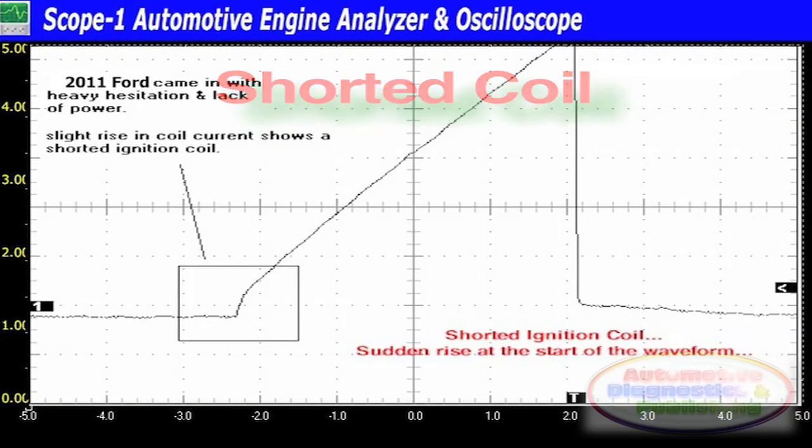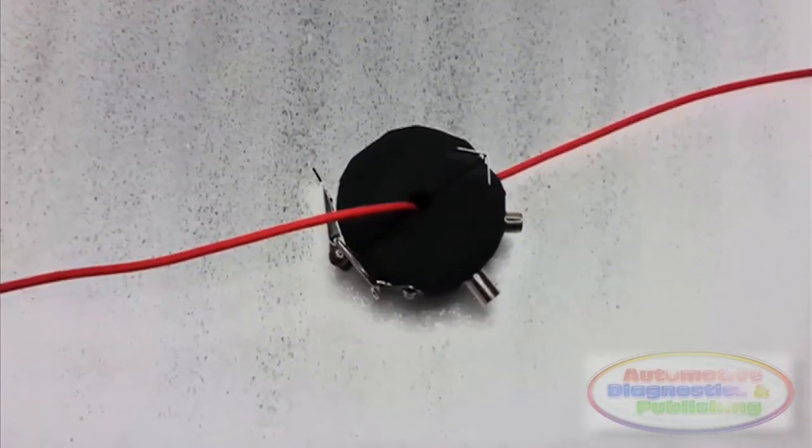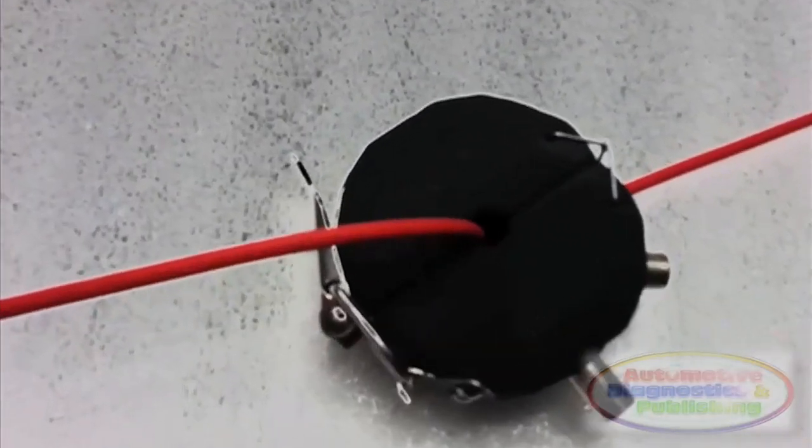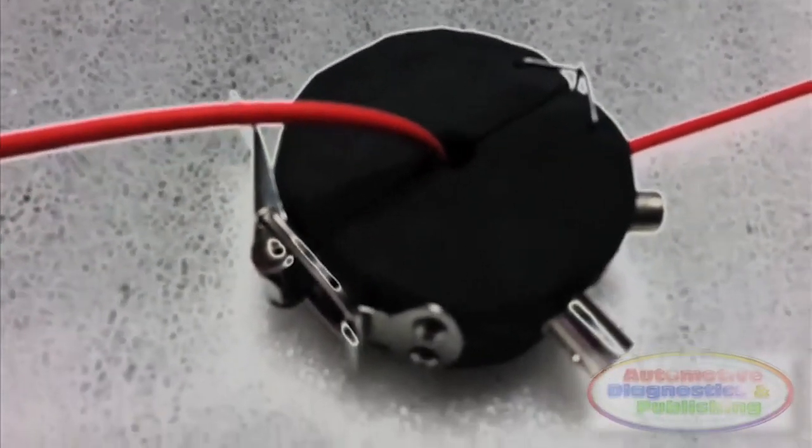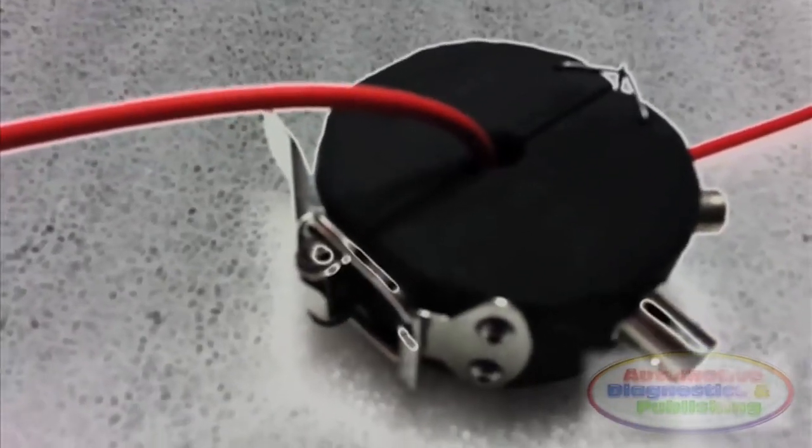Ignition coil operation, pulse width dwell, and maximum current flow. Current flow in a coil is used to diagnose the ignition module or computer and the entire ignition circuit itself.